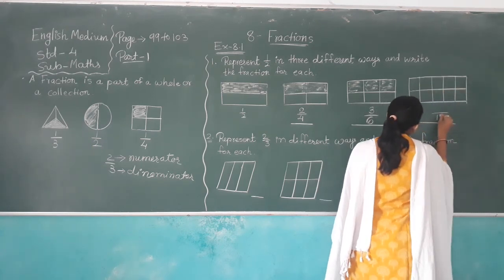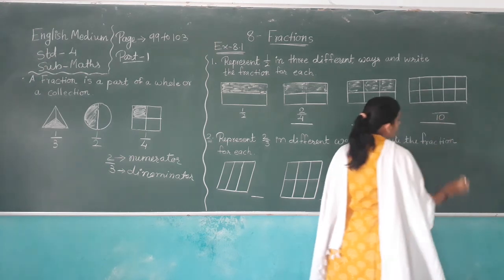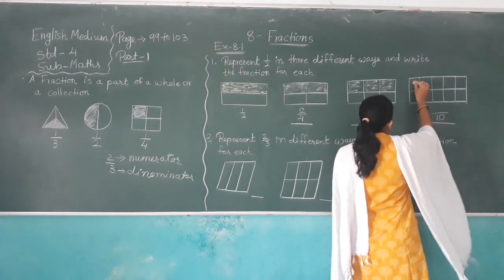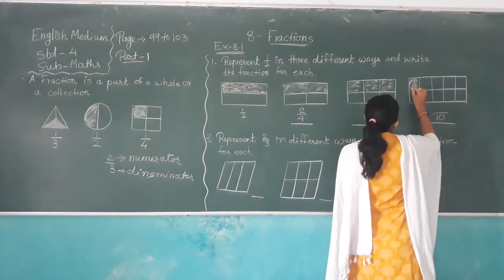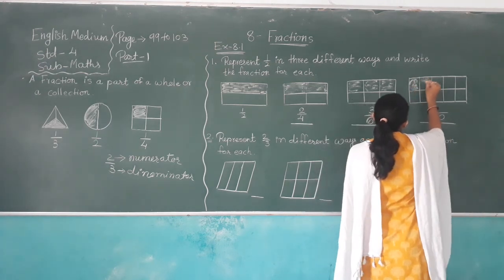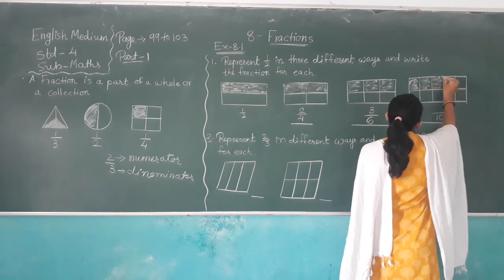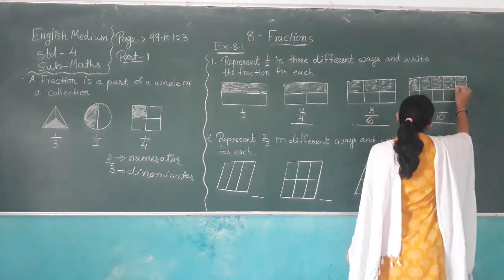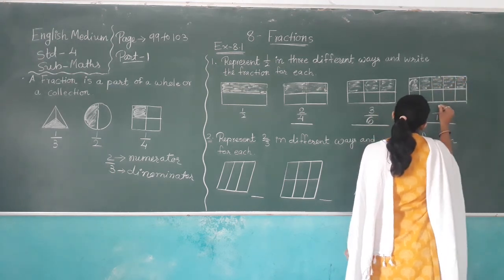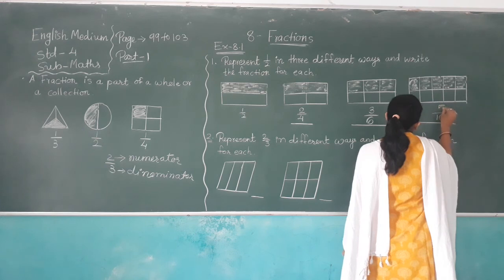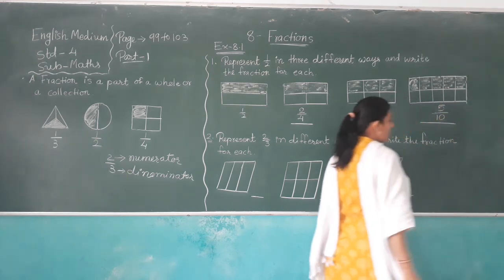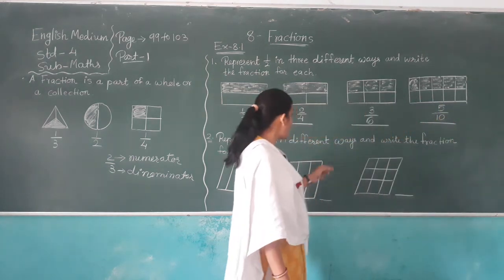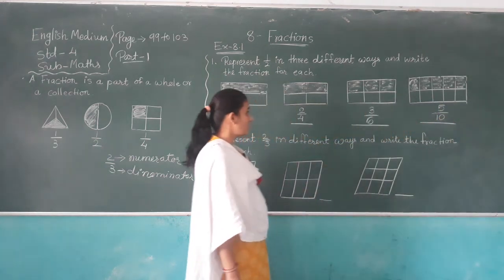How many parts are there? Ten. Total ten parts are there, and one, two, three, four, and five parts are shaded. That means five out of ten.